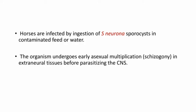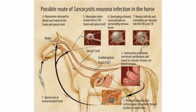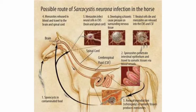These are the possible routes of Sarcocystis neurona infection in horses. Sporocysts in contaminated food reach the horses, penetrate the intestinal epithelium, and travel to somatic tissues via blood vessels. Asexual reproduction — schizogony — in somatic tissues produces merozoites, which are released into the blood and travel to the brain and spinal cord. Merozoites infect neural cells in the CNS, developing schizonts that cause pressure on surrounding nervous tissue. Neural cells die and merozoites are released into the CNS and CSF.